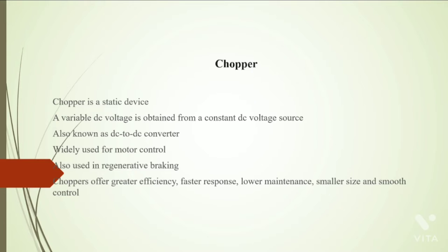Chopper is a static device. A variable DC voltage is obtained from a constant DC voltage source. It is also known as DC to DC converter.